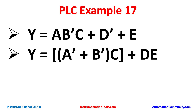Let's move to another example: Y = (Ā + B̄)C + DE. For inputs A and B, we'll use normally closed contacts connected in parallel. Then a normally open contact for C in series with (Ā + B̄). Then there is another OR gate for D and E, where D and E are connected in series but in parallel with (Ā + B̄)C.